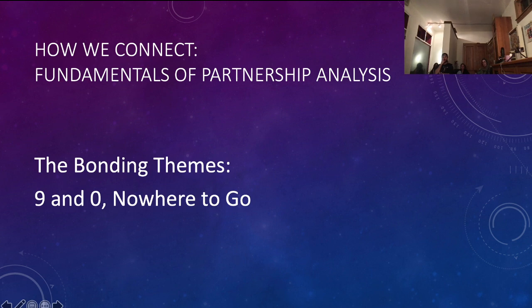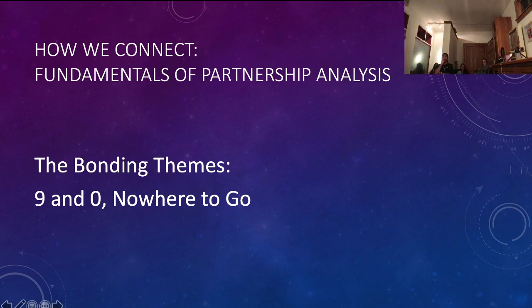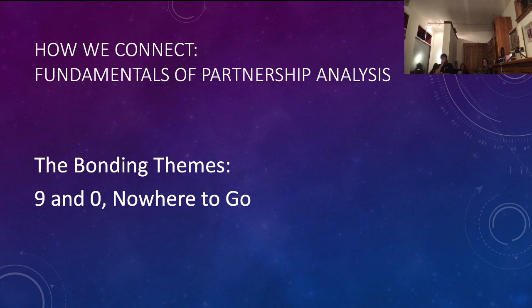When one person has half the channel and the other has the other half, it defines both of those centers — that is how definition occurs. So what is this bonding theme? Ra made these nice rhymes. Nine and zero — nowhere to go. It doesn't sound great, but it's not bad. It's just there's no pressure release valve for this kind of relationship. When you have openness in the chart, it gives you somewhere to go, in the sense that openness is where people come and go and things can change.